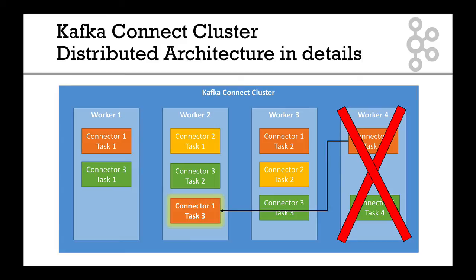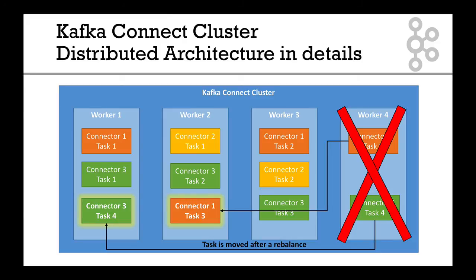Connector number one, task number three, gets moved from worker four to worker two. And similarly, connector number three, task number four, got moved to worker one. As we can see, worker one is now doing two tasks related to connector three — but that's okay. You can have multiple tasks of the same connector on the same worker.